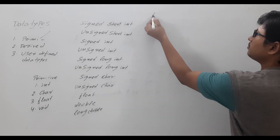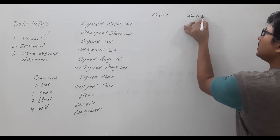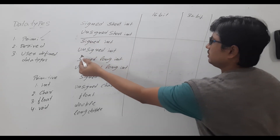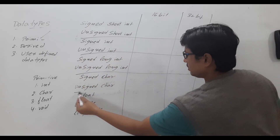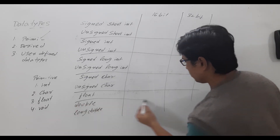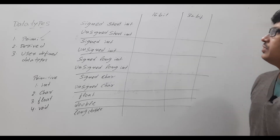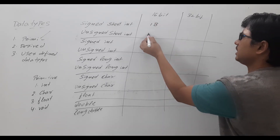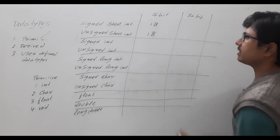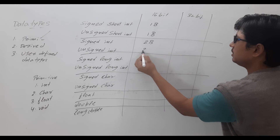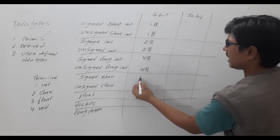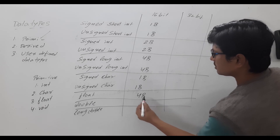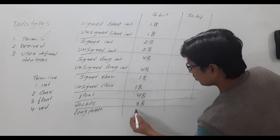For a 16-bit compiler: short int allocates 1 byte (whether signed or unsigned). Signed int occupies 2 bytes, long int occupies 4 bytes, and char is always 1 byte. Float is 4 bytes, double is 8 bytes, and long double is 10 bytes.